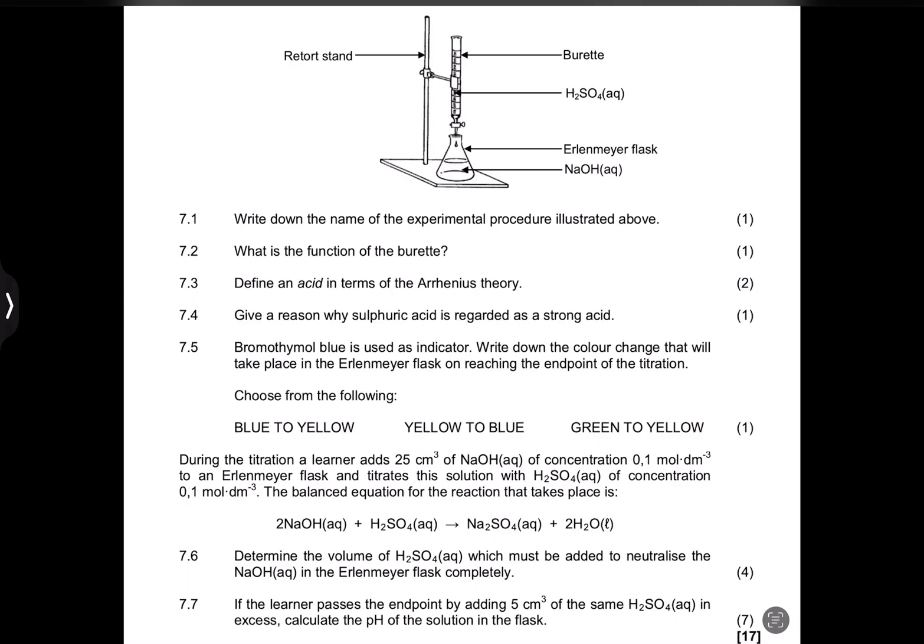Bromothymol blue is used as an indicator. They say write down the color change that will take place in the Erlenmeyer flask on reaching the end point of this titration. You would need to know the color changes of bromothymol blue in acid or base. Honestly, your favourite uncle isn't entirely certain — it's somewhere between blue and yellow in acidic and basic conditions, so just choose one.